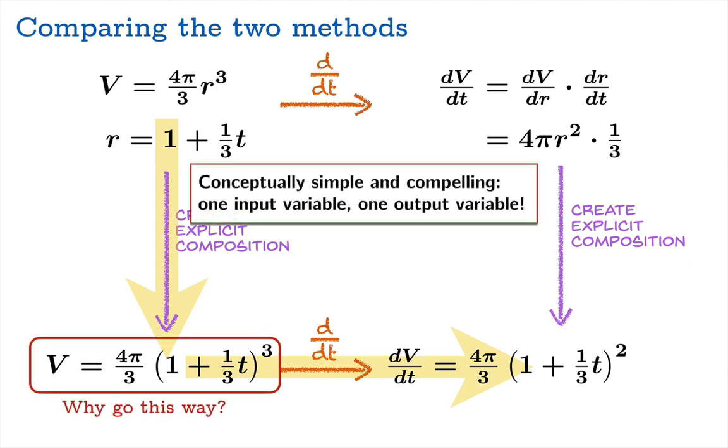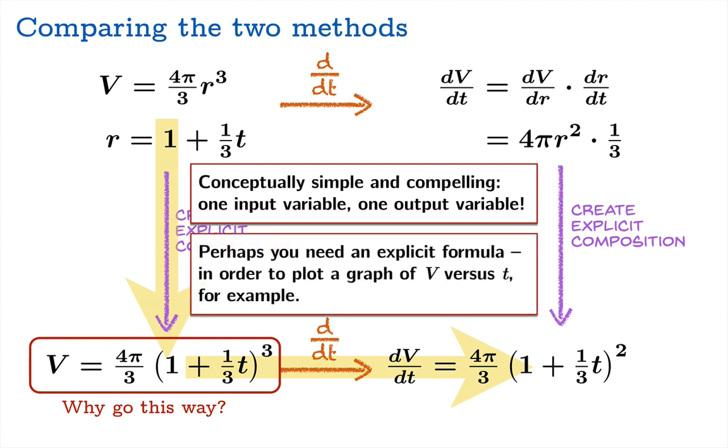Why would you want to go this way? Well, it's conceptually simple and compelling. You're creating, right off the bat, a function with one input variable and one output variable. This is, after all, one variable calculus, so this is probably the more conceptually simple way to go. Another good reason. Perhaps you need an explicit formula in order, say, to plot a graph of v versus t.